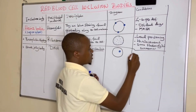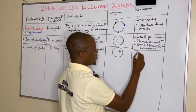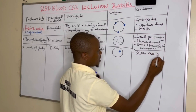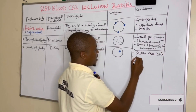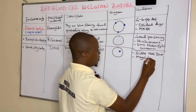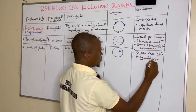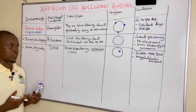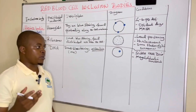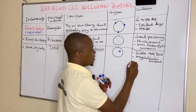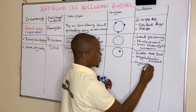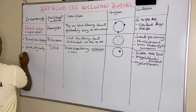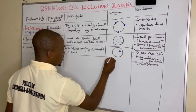Howell-Jolly bodies are seen in conditions like sickle cell disease or sickle cell anemia, megaloblastic anemia, and myelofibrosis such as leukemias. They can also be found post-splenectomy.